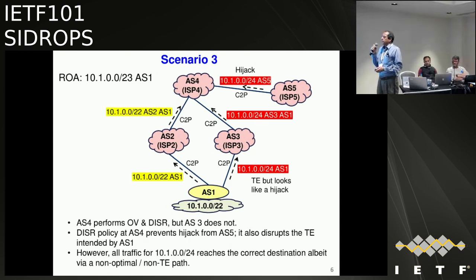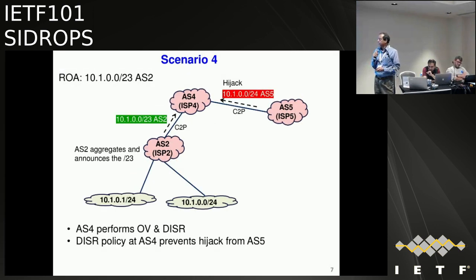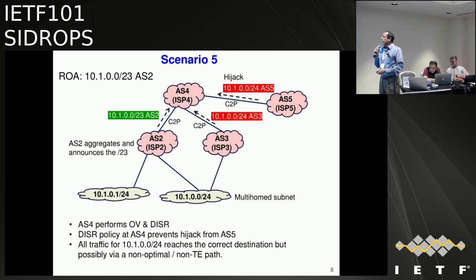The same thing happens if a ROA was created for a /23, which makes the /22 not-found as opposed to valid. AS4 decides to route traffic to the not-found rather than the invalids — drops the invalids and traffic still gets to the correct destination. In another scenario where less specifics are aggregated by AS2 and the ROA was created for the /23 aggregation: the hijack is caught and dropped, traffic definitely reaches the correct path through AS2. No problem there.